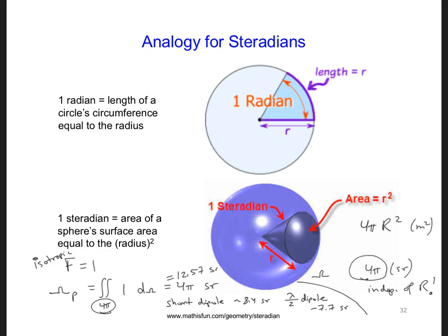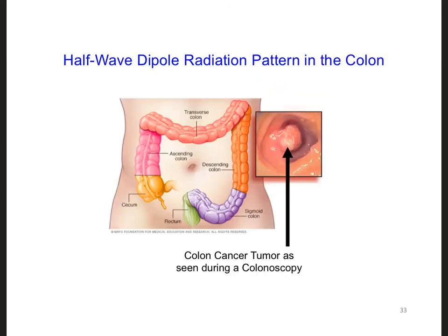In the practice problem for this lecture, we'll practice calculating the beam pattern solid angle for an antenna. Now consider the radiation pattern for the short dipole and the half-wave dipole. Let's ask another question relating to our design challenge.